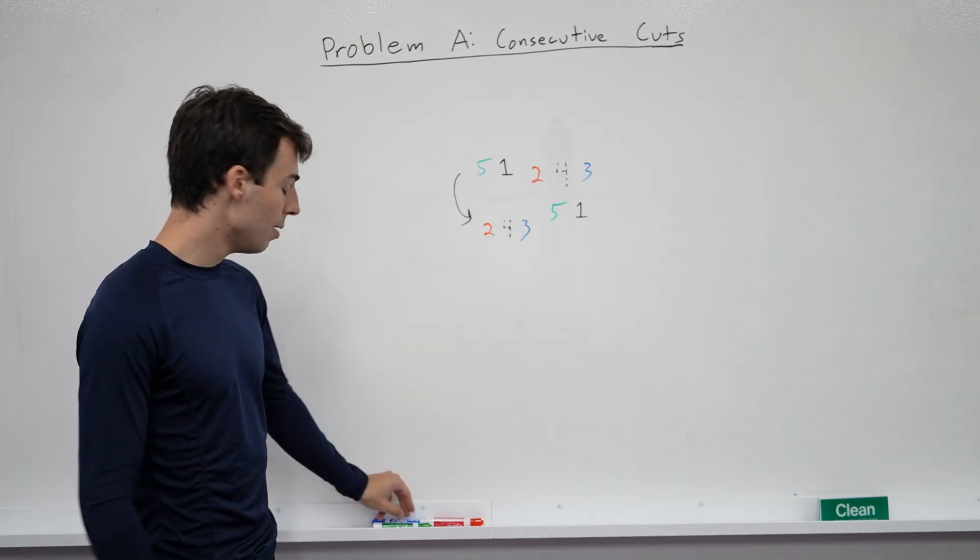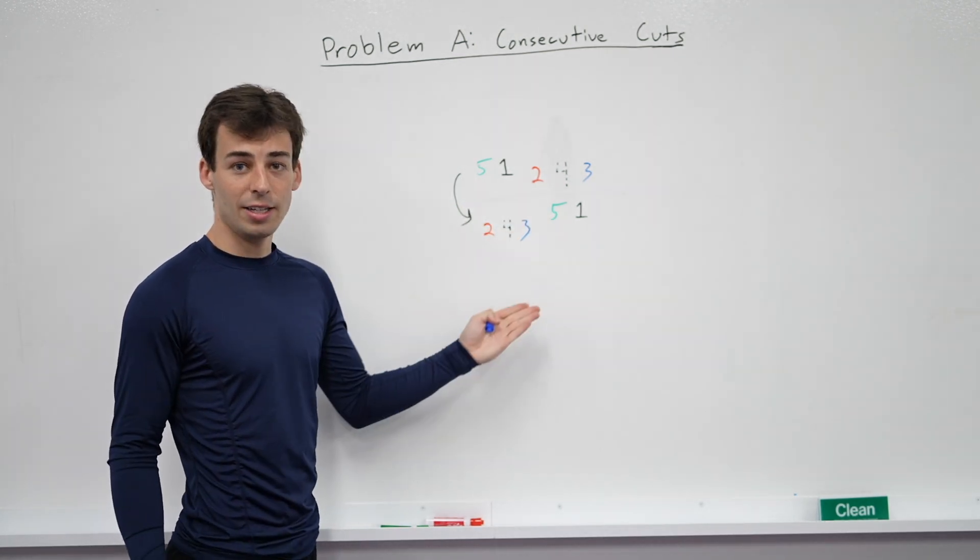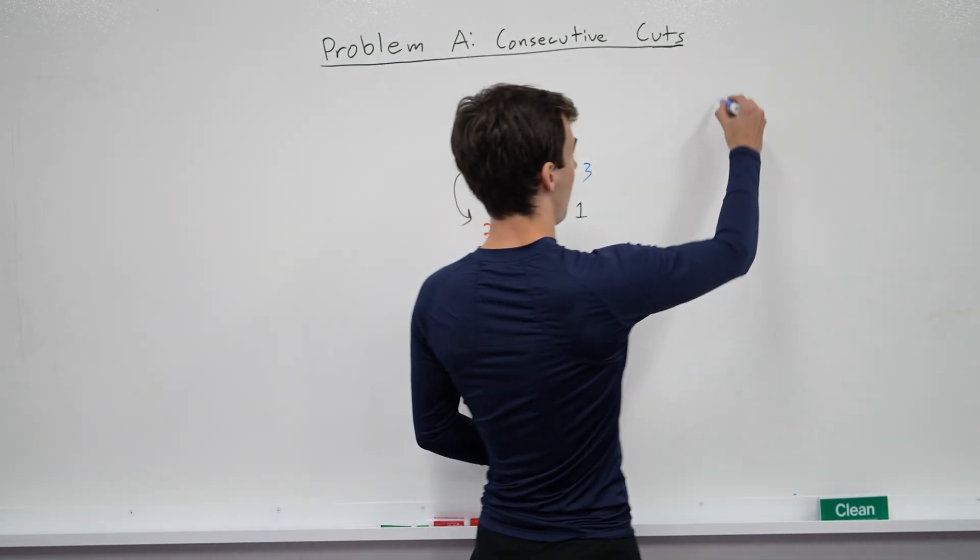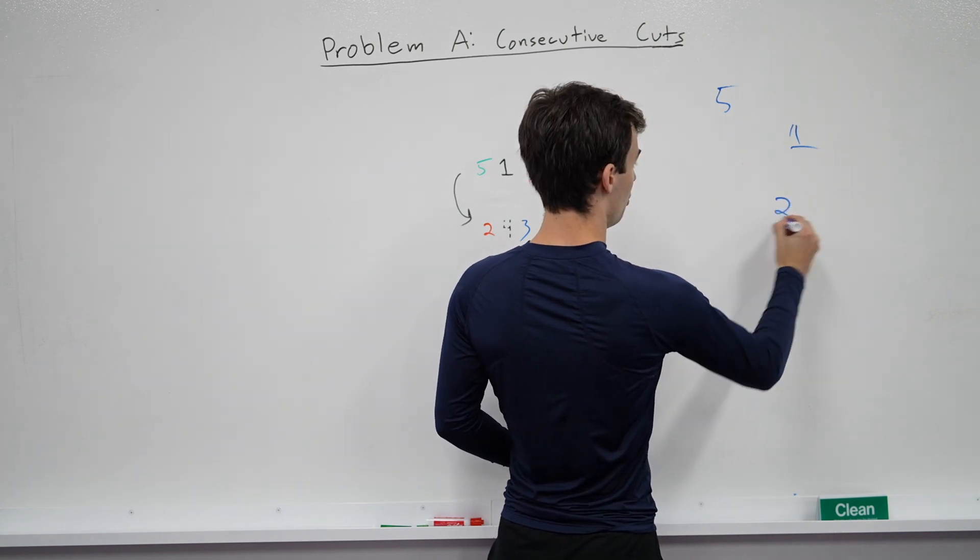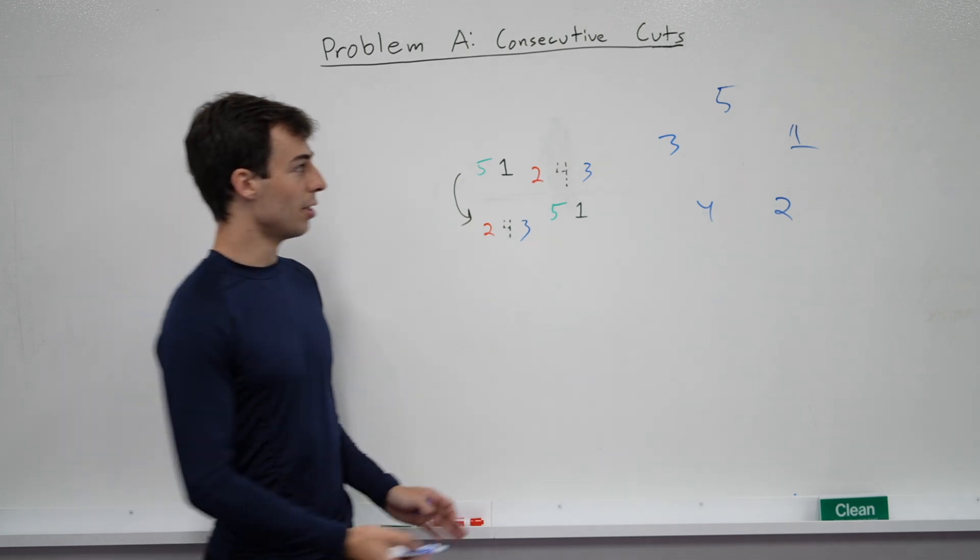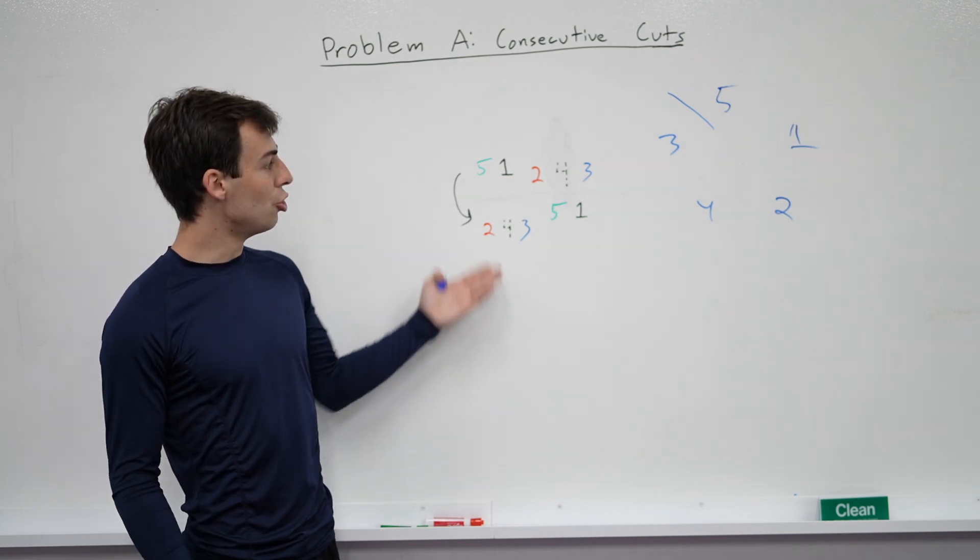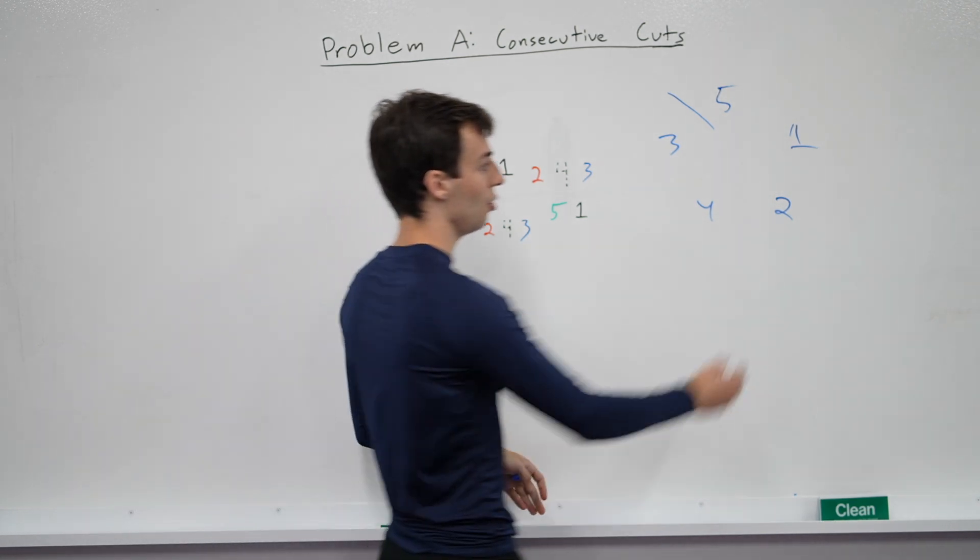This is one way of looking at it, but an equivalent way is instead of thinking about the cards in a line, we can think about the cards in a circle. So we can have 5, 1, 2, 4, 3. And initially, the start of the deck is here. But after we make a cut, all we're doing is changing the position of the start of the deck to something else, in this case, before element 2.